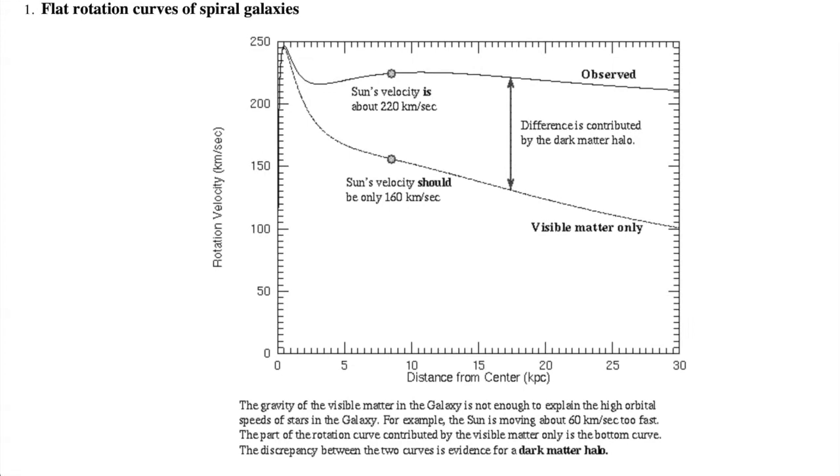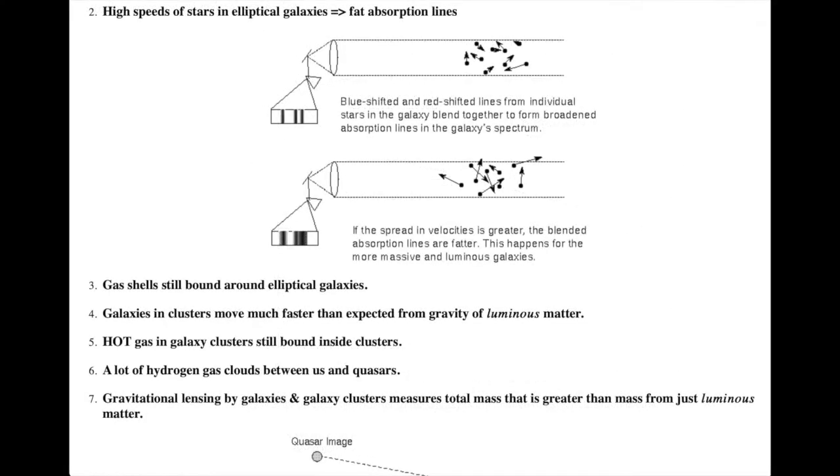Similar sort of thing is seen when we look at the motions of the stars and gas in the elliptical galaxies. The stars are accelerating much more than what can be explained from the visible matter's gravity, and the visible matter's gravity wouldn't be enough to keep the gas shells around all of the billions of galaxies.